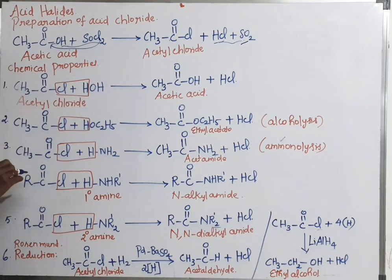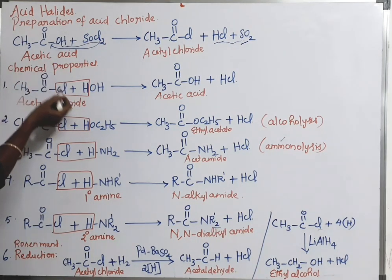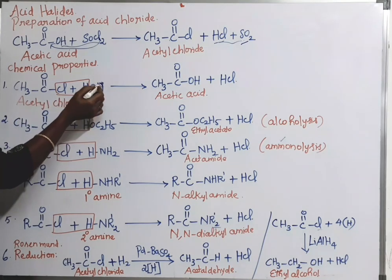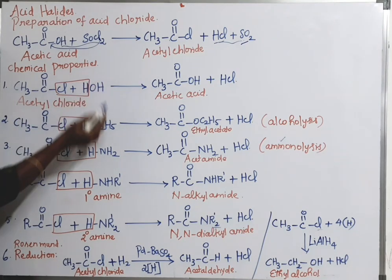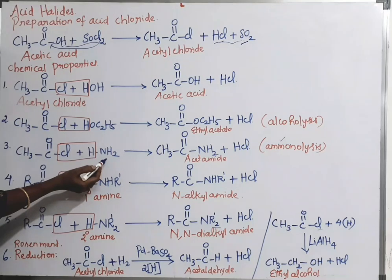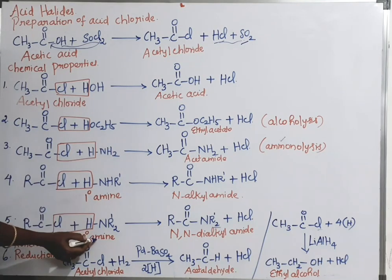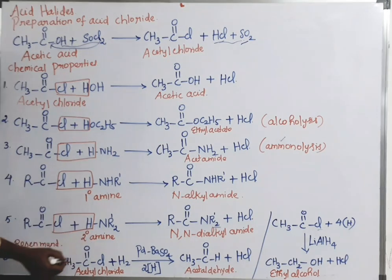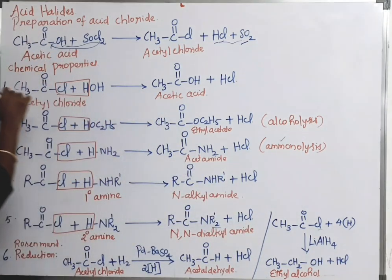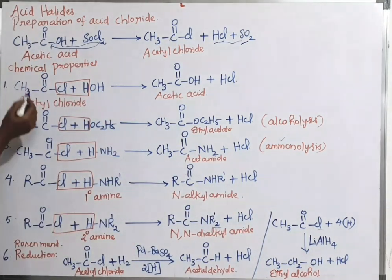Let us see about the chemical properties of acid chloride. Acid chloride undergoes reactions with water (hydrolysis), ethanol, ammonia, primary amine, secondary amine, and reduction reactions.